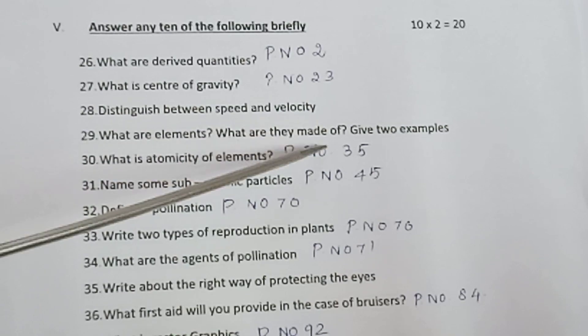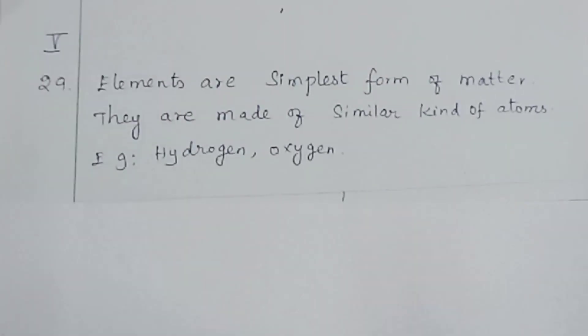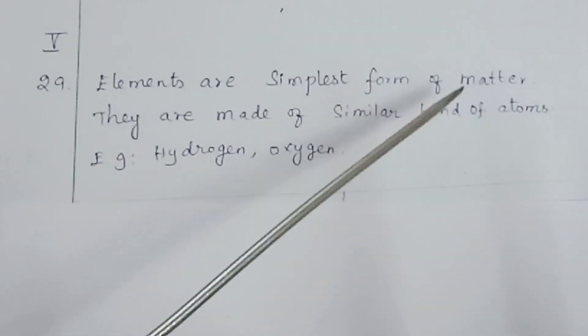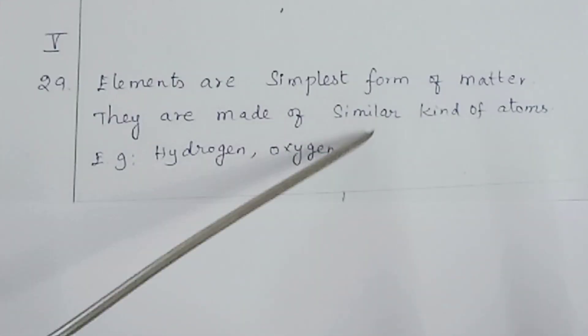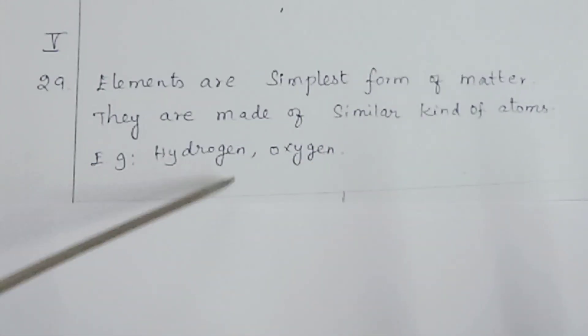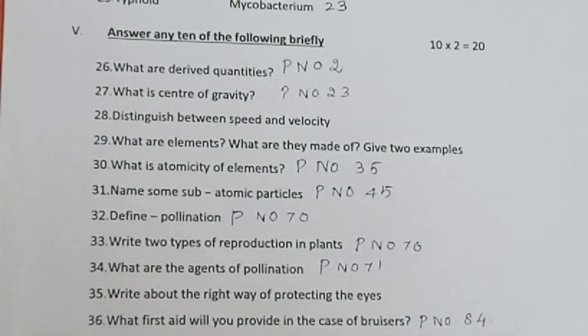Question 29: What are elements? What are they made up of? Give two examples. Elements are the simplest form of matter. They are made up of similar kinds of atoms. Examples: hydrogen and oxygen.